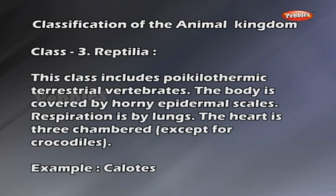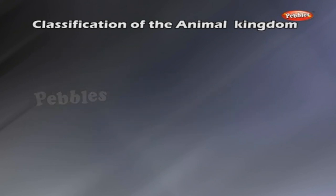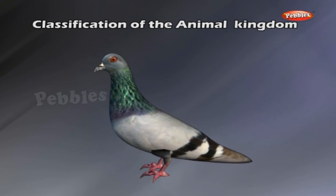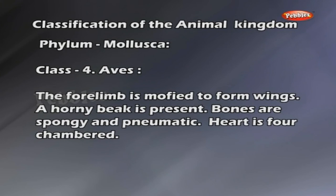Class 3: Reptilia. This class includes poikilothermic terrestrial vertebrates. The body is covered by horny epidermal scales. Respiration is by lungs. The heart is three-chambered, except for crocodiles. Class 4: Aves. These are warm-blooded vertebrates. The whole body is protected by feathers, except the feet where scales are present. The forelimb is modified to form wings. A horny beak is present. Bones are spongy and pneumatic. The heart is four-chambered. Example: Pigeon.